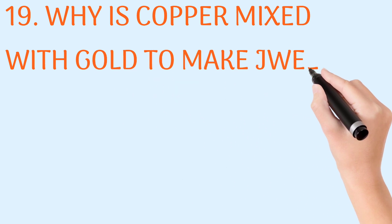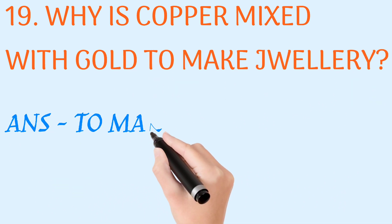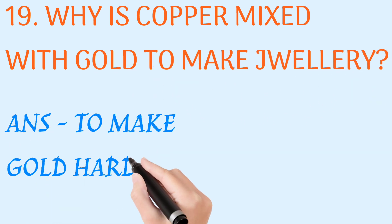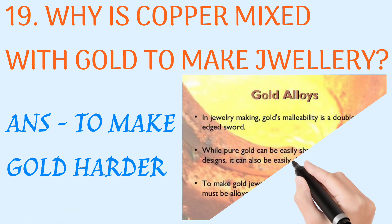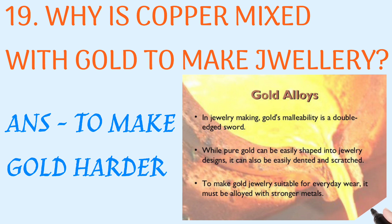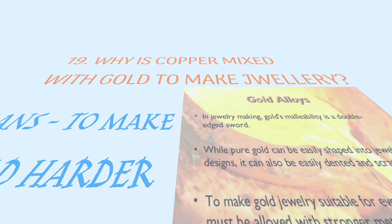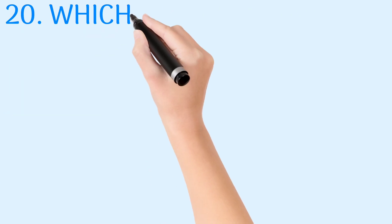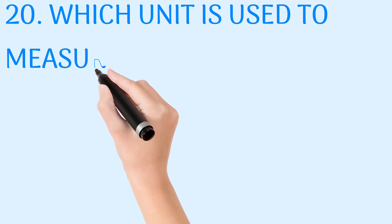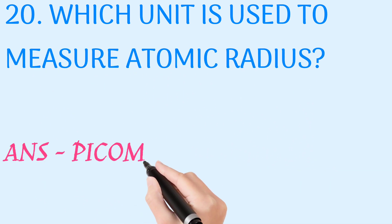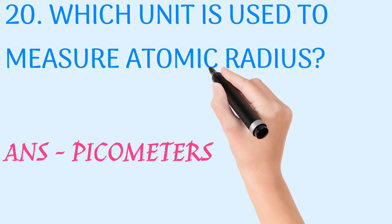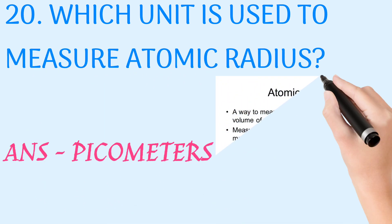Why is copper mixed with gold to make jewelry? Answer: to make gold harder. Which unit is used to measure atomic radius? Answer: picometers.